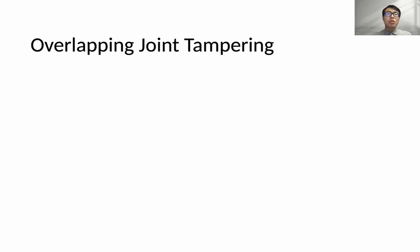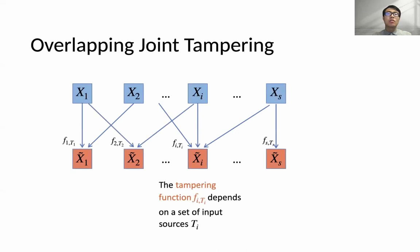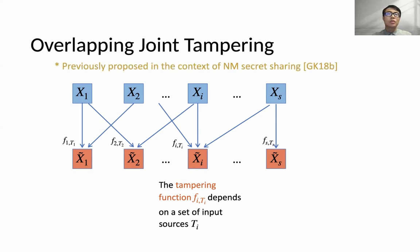The most general model one could consider is overlapping joint tampering. In such a tampering, for each i, the tampering function can depend on an arbitrary set of input sources T_i. This tampering model was previously proposed by Goyal and Kumar in 2018, but in the context of non-malleable secret sharing. In the context of non-malleable extractors, no previous result considered this model, since they only considered the two-source case.